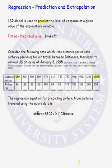In our original data pairs, the smallest distance used to build our least squared regression line was 189 miles, and the largest distance traveled was 1,502 miles. If we use our regression equation to find predicted values outside of this range — 189 to 1,502 miles — that's called extrapolation. We do not know the relationship between distance and airfare for distances less than 189 or greater than 1,500 miles. Even if the relationship is linear between 189 and 1,502, there is no guarantee it remains linear outside those values.